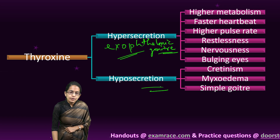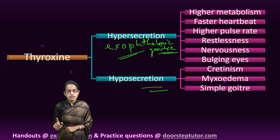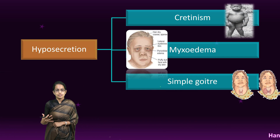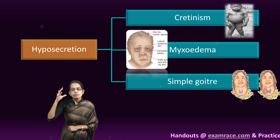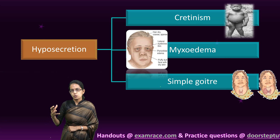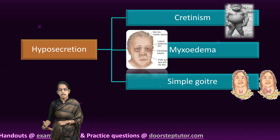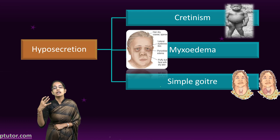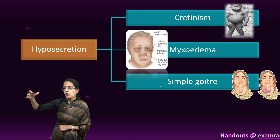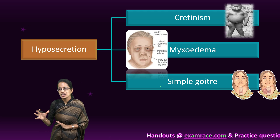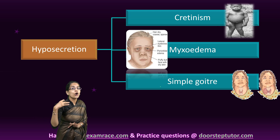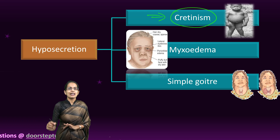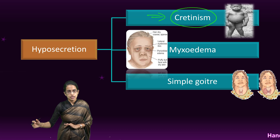Hyposecretion leads to three important disorders: cretinism, myxedema, and simple goiter. Cretinism is a hyposecretion disorder where physical growth is retarded. As seen in the picture, characteristics include pot belly, pigeon chest, deformed teeth, shorter height, shorter hands and feet, and delayed or retarded mental and physical growth.